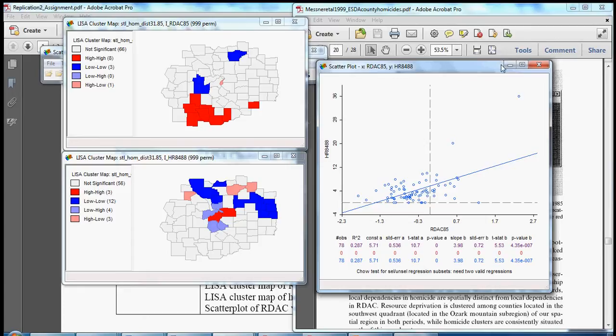So this replicates the LISA cluster map of resource deprivation affluence, the LISA cluster map of homicide rates 84-88, and this scatter plot showing a positive relationship between these two variables.